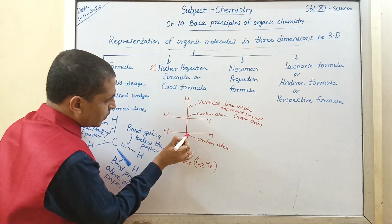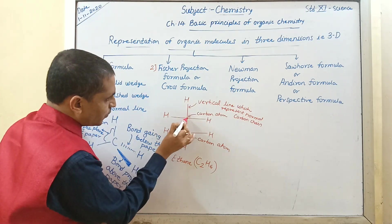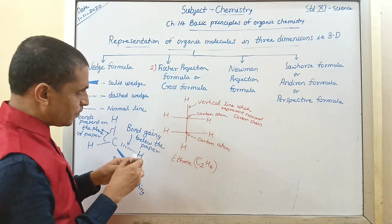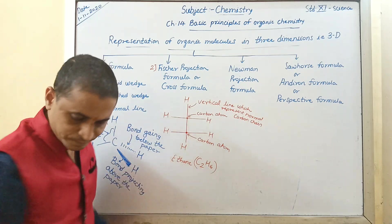The vertical line represents the normal carbon chain and this cross represents carbon atoms.